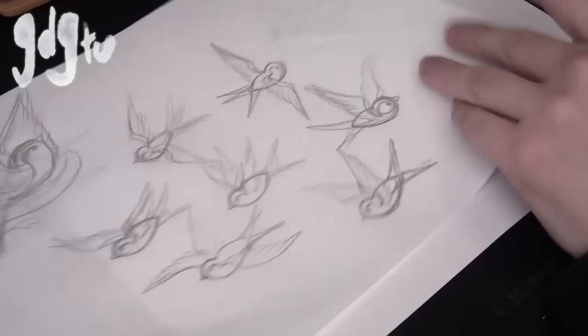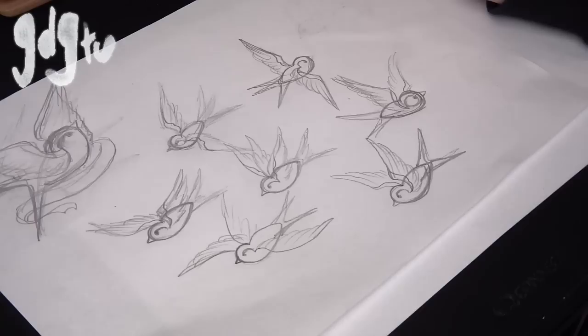So when I'm drawing a sheet of flash, what I'll do is I'll start off with a sort of study of whatever I'm doing. So here's some swallows that I drew up for a sheet that I'm going to be doing in my next video. It's just rough sketches of kind of shapes, just to get an idea of what I'm doing.